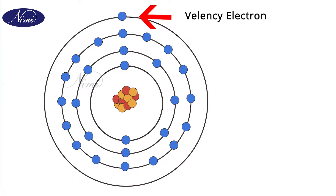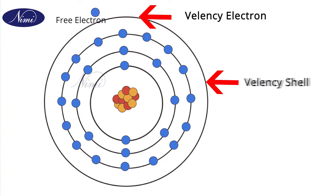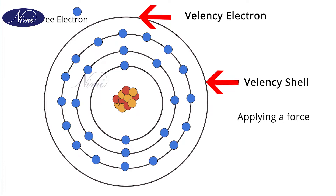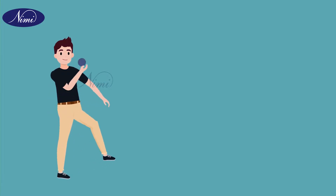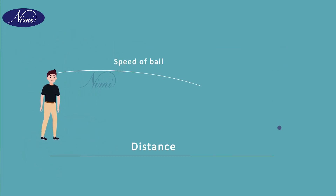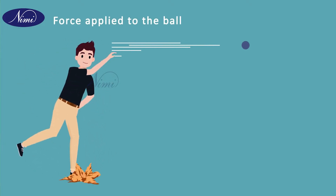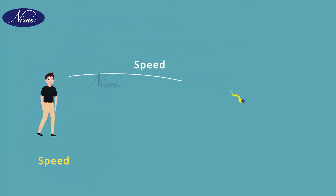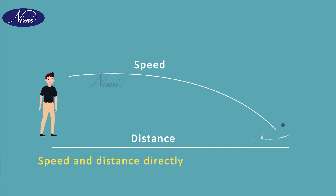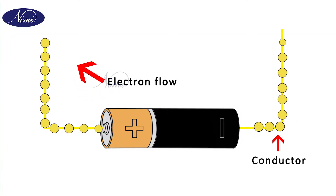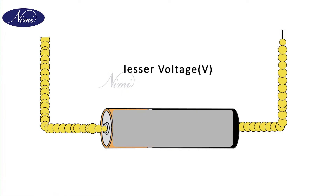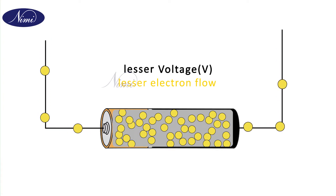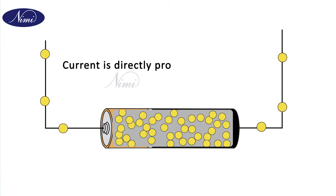The valency electron becomes a free electron when it is removed from the valency shell by applying a force, and that force is called voltage or EMF. Imagine a boy throwing a ball — the distance and speed of the ball depend upon the force applied. Therefore, speed and distance are directly proportional to the force. Same way, electron flow in a conductor is caused by voltage. More voltage will cause more electron flow, and lesser voltage will cause lesser electron flow. Therefore, current is directly proportional to the voltage.